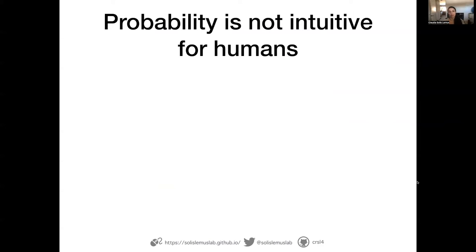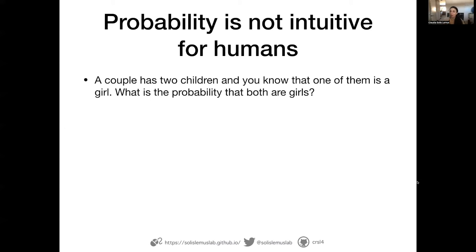When I'm talking about probability with people that are not statisticians, I usually like to start with this idea that probability is not intuitive for humans. There is something in our brains that makes it really difficult to grasp probabilities and to calculate them on the spot. Our gut will give us a probability, but that will not necessarily be the correct probability. When it comes to probabilities, we want to trust the formulas rather than our gut.